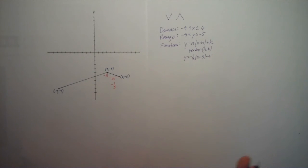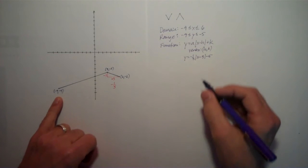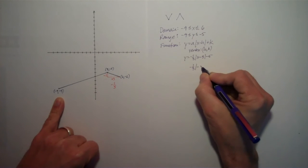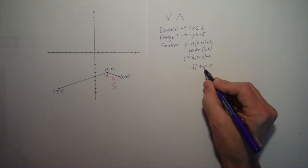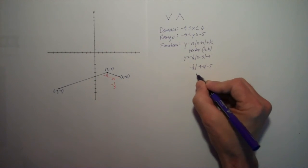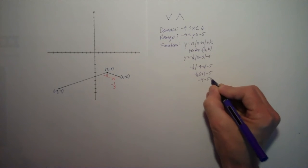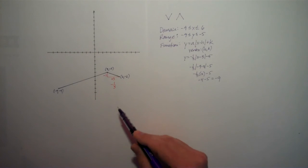And in order for me to feel really good about my function here, let me plug in the points that I see here. I'm going to plug in negative 9 to negative 9. If I take negative 1 third times the absolute value of negative 9 minus 3 minus 5. Let's see, negative 9 minus 3 is negative 12. The absolute value of that is positive 12, so I get negative 1 third times 12 minus 5. Negative 1 third of 12 is negative 4 minus 5 equals negative 9. That's the y-coordinate of my point, so I feel really good about that.